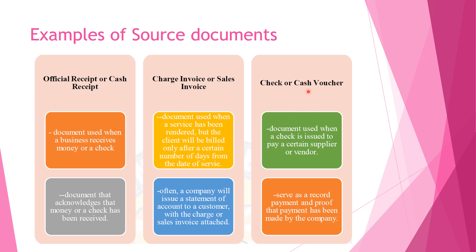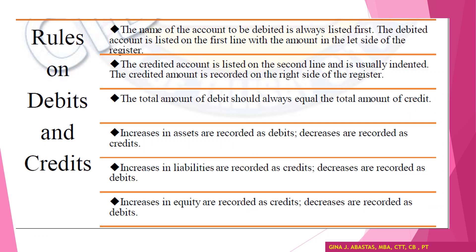Another source document is the check or cash voucher. This document is used when a check is issued to pay a certain supplier or vendor, and it serves as a record of payment and proof that payment has been made by the company. Regarding rules on debits and credits, debits and credits are an integral part of the journalizing process. In accounting, debits and credits are abbreviated as DR and CR respectively.